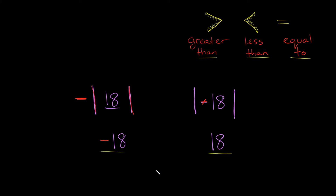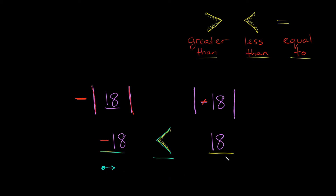So which number is bigger? 18 is bigger. Remember, I want to eat the bigger number, so I'm going to make my mouth face this way. You can even draw the little teeth on there to remind yourself. So now I know my sign is facing the correct way because we're eating the bigger number. Reading our answer left to right, we read this as: negative 18 is less than 18. And that would be your answer.